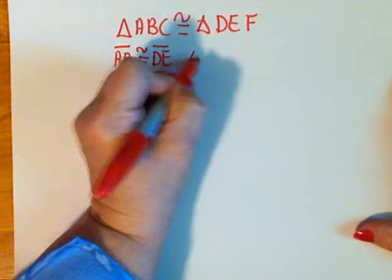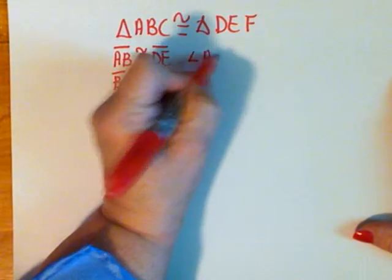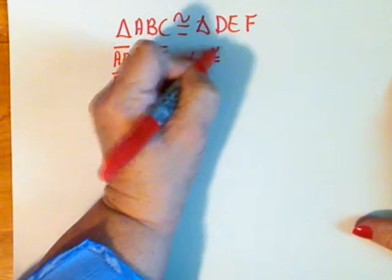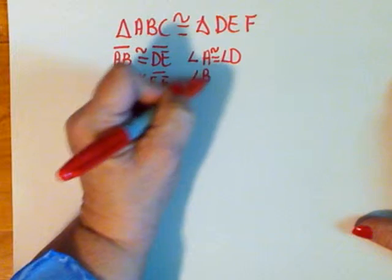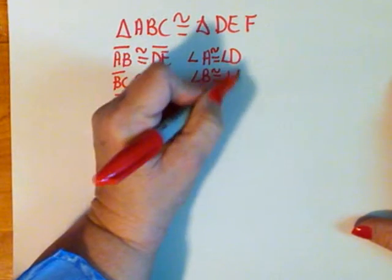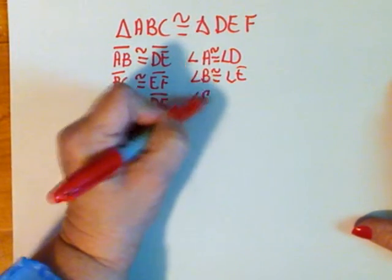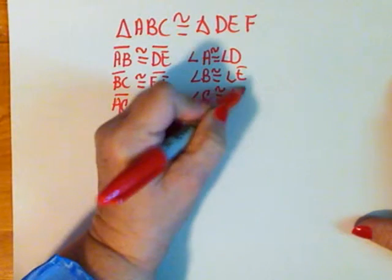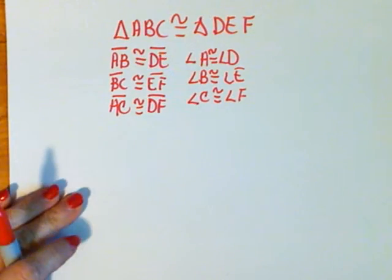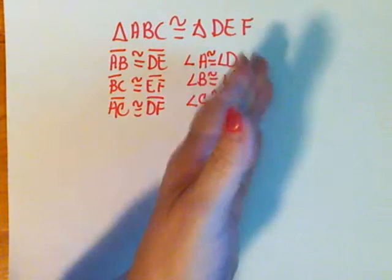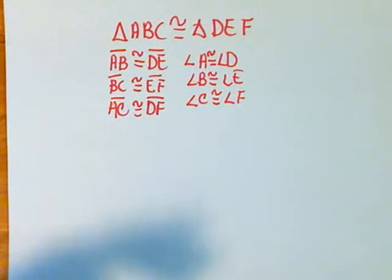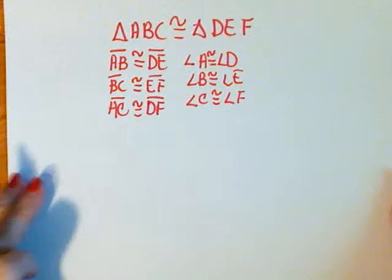Now related to angles, I know that angle A is going to be congruent to angle D because they're in the same location. Angle B congruent to angle E, angle C congruent to angle F. Those are the six congruent statements—three sides to three sides, three angles to three angles—that I can make from every congruent statement with triangles.